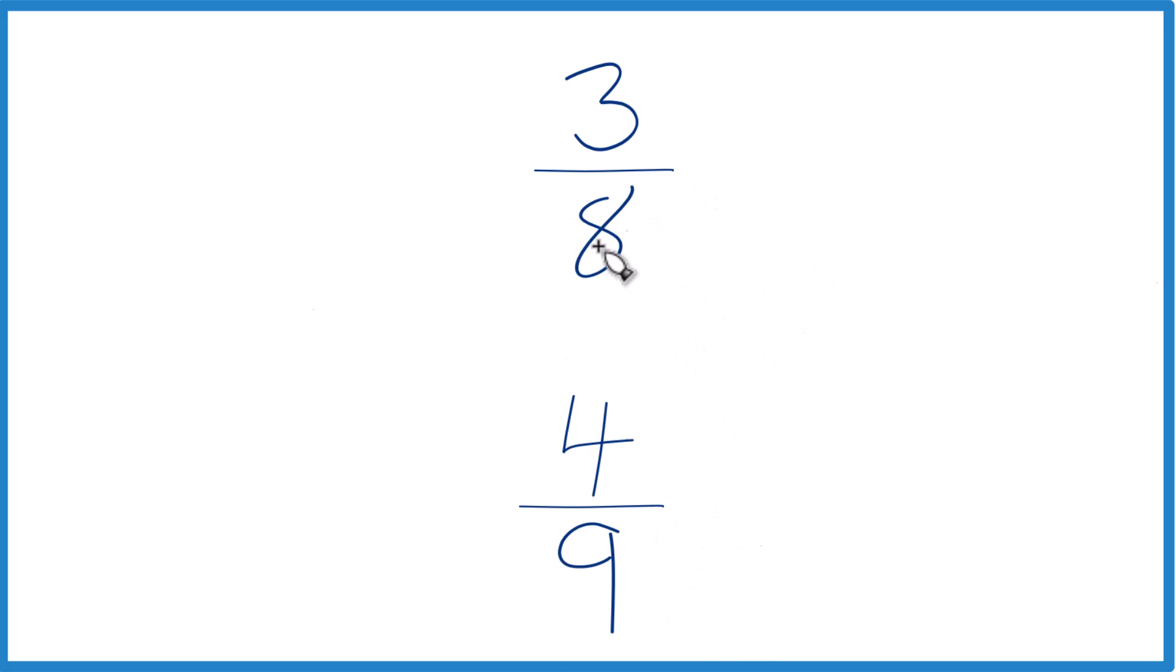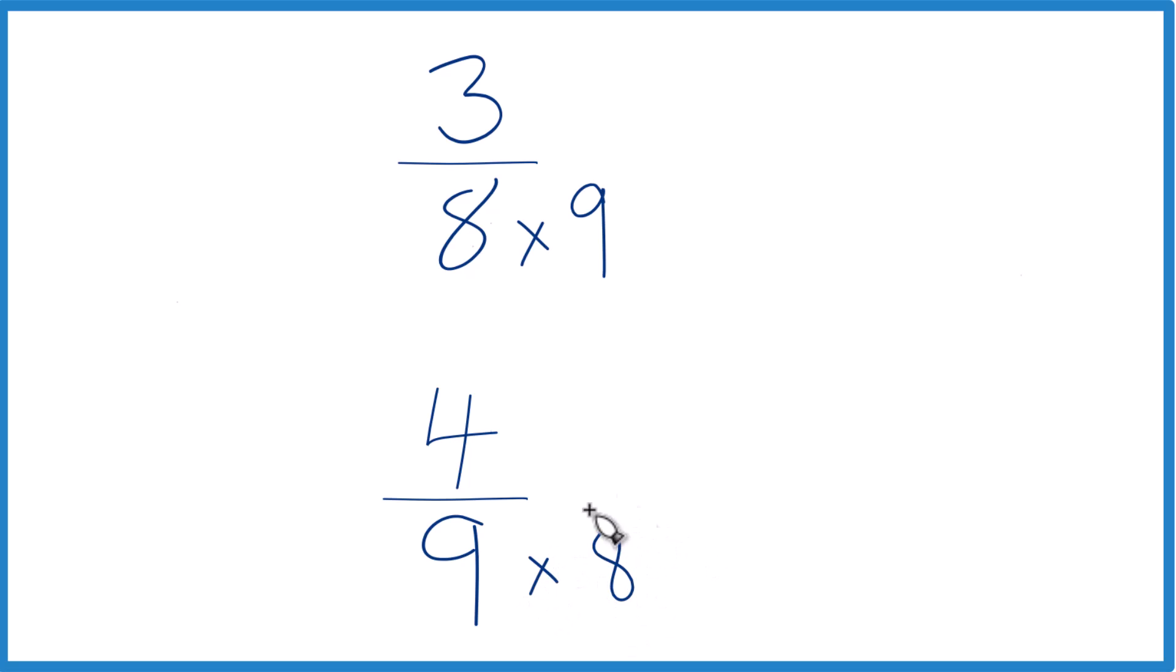And if I took 8 and multiplied it by 9, and then multiplied 9 by 8, that would give me a common factor. 9 times 8 equals 72, and 8 times 9 equals 72 as well. So now we have this common denominator here.